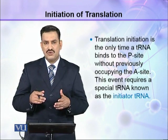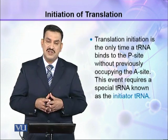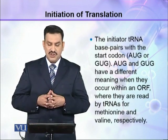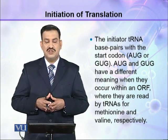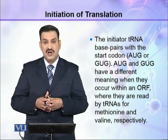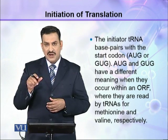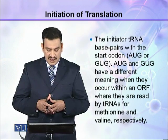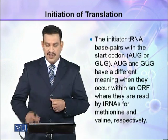Because the initiator tRNA must attach to the P site, it must be different from regular tRNAs, and this tRNA is called the initiator tRNA. The initiator tRNA base pairs with the start codon. The start codons are AUG or GUG. When AUG or GUG appear within the open reading frame, they code for different amino acids — for example, AUG codes for methionine and GUG codes for valine.